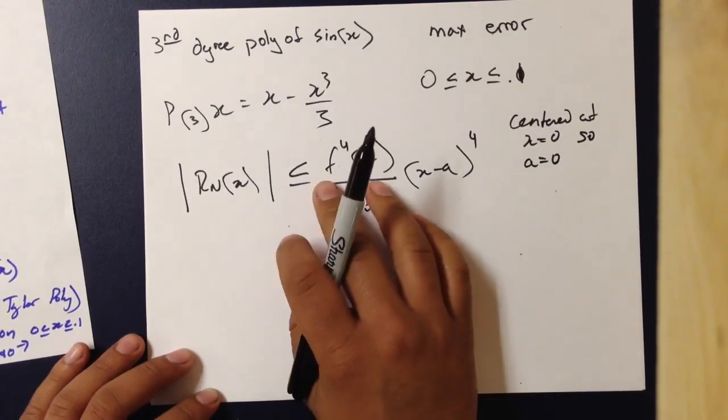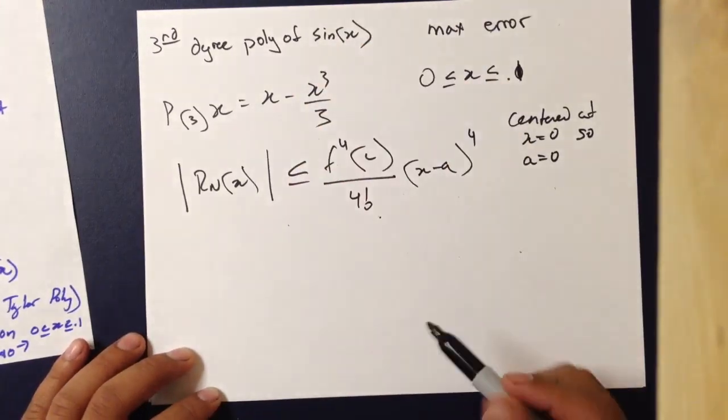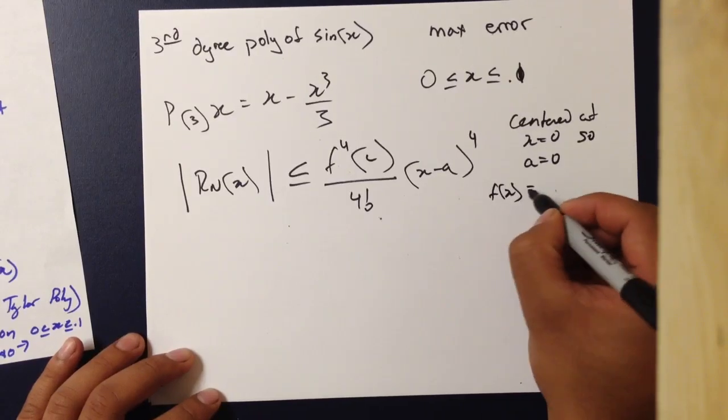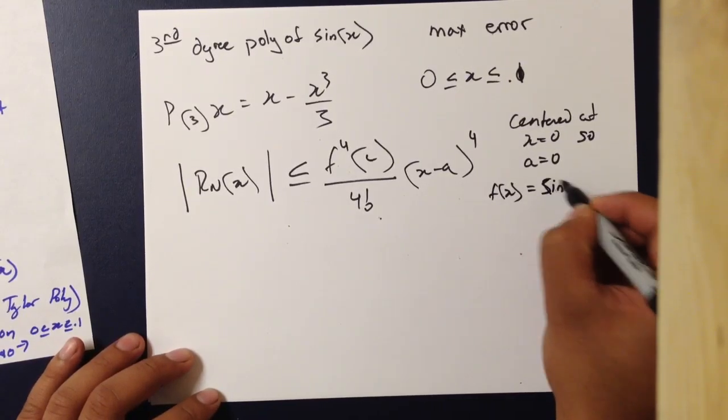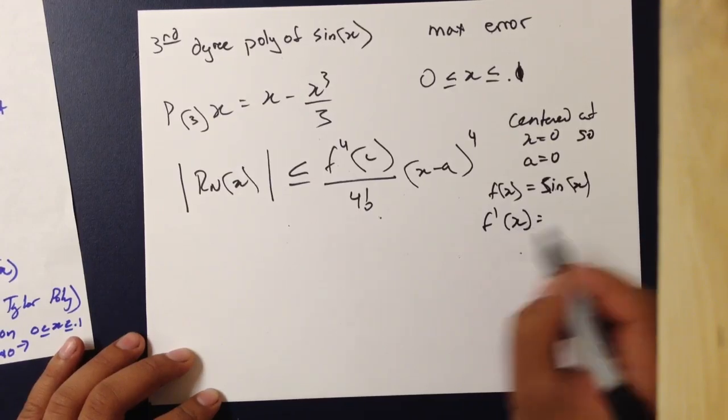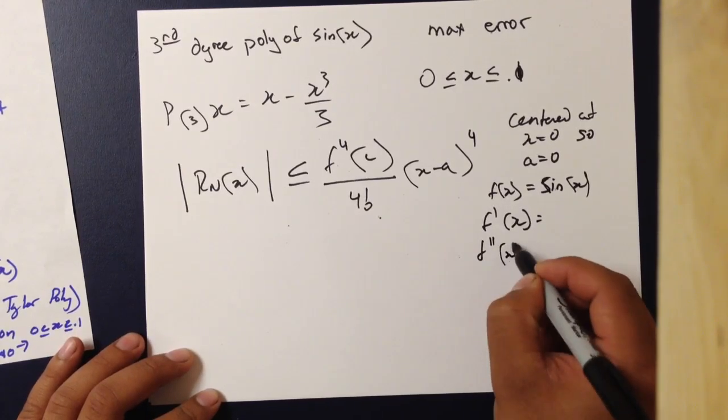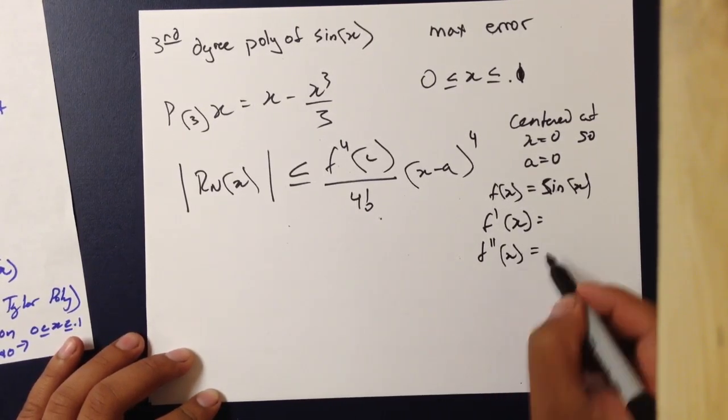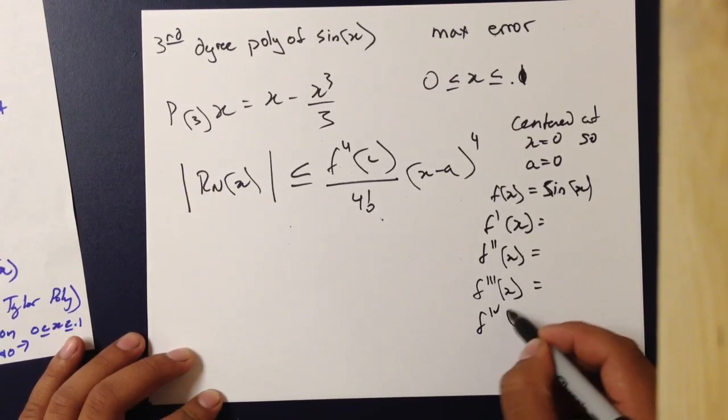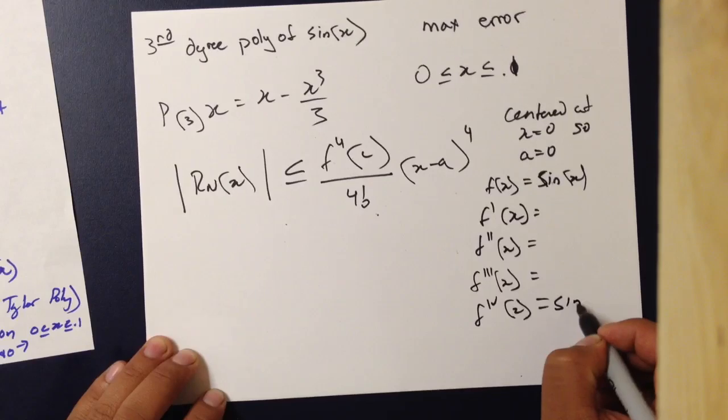We can also find the fourth derivative of the original function, sine of x. So, the original function value of sine of x. And if you keep taking derivatives, you will eventually get equals sine of x.